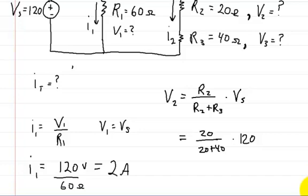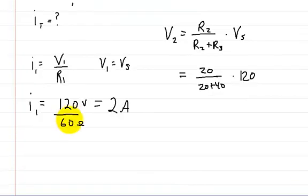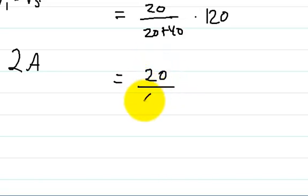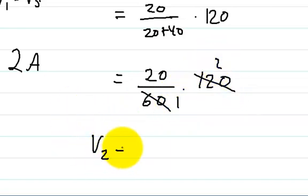So we're going to plug in those values and we're going to get 20 over 20 plus 40 times 120. So that's going to be 20 over 60 times 120. 60 goes into that once, 60 goes into this twice. So V2 is going to be equal to 40 volts. And now we've got that one.